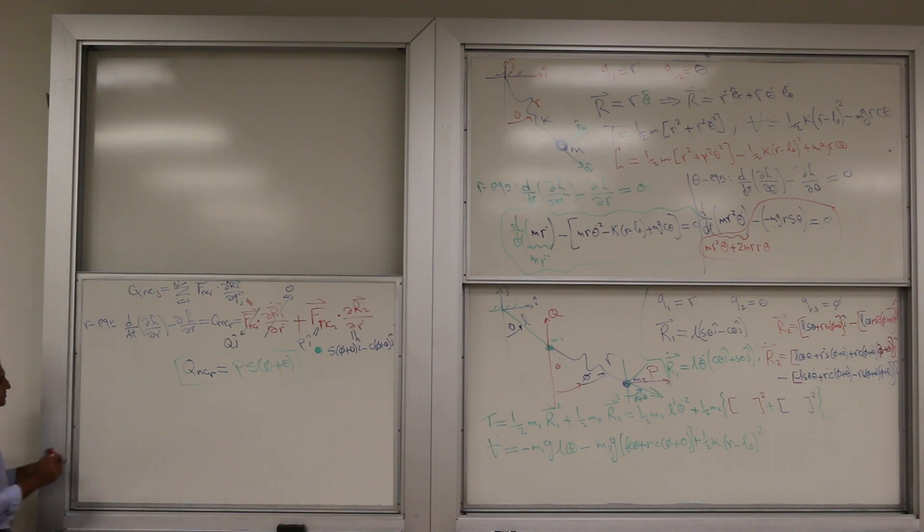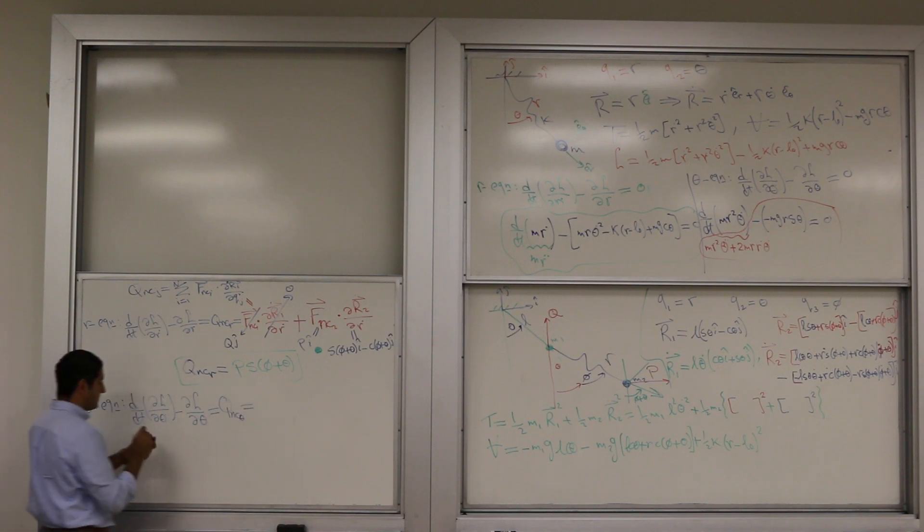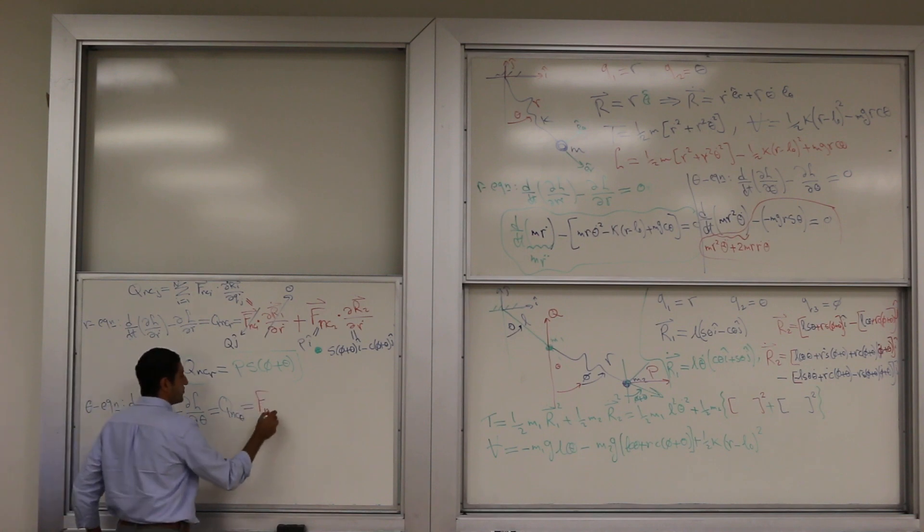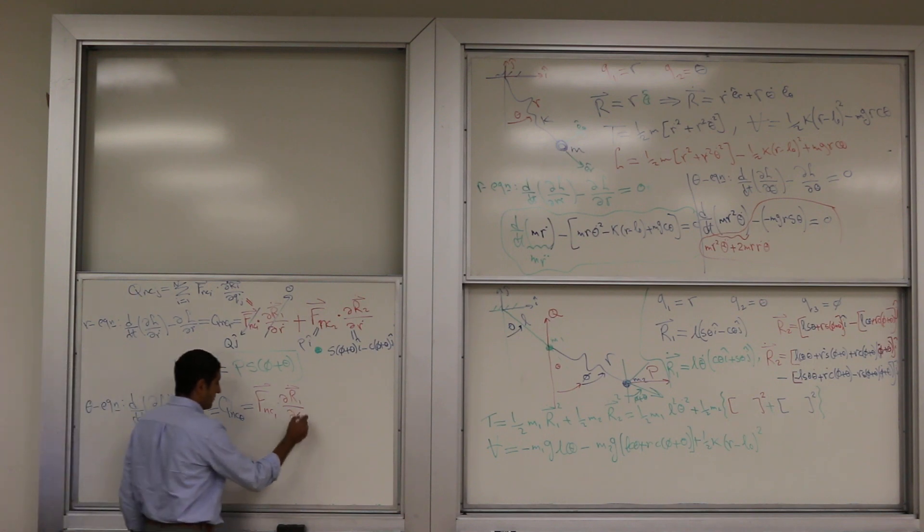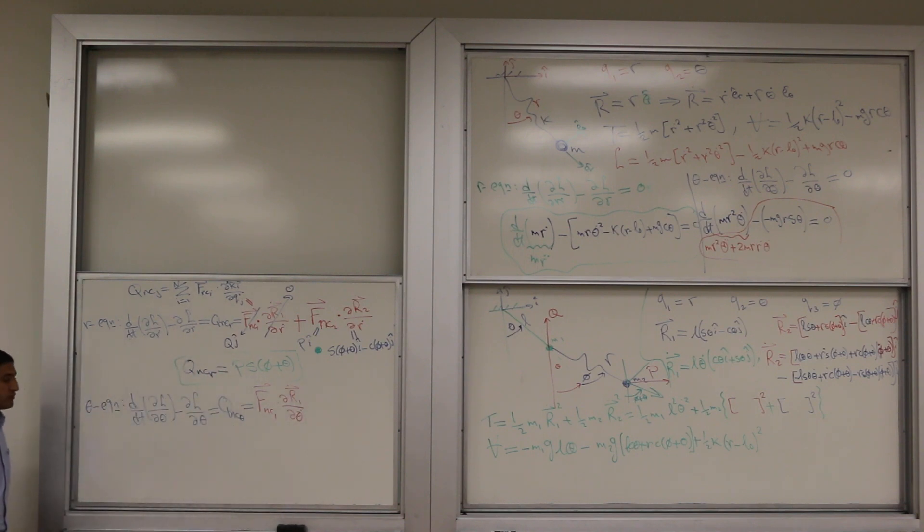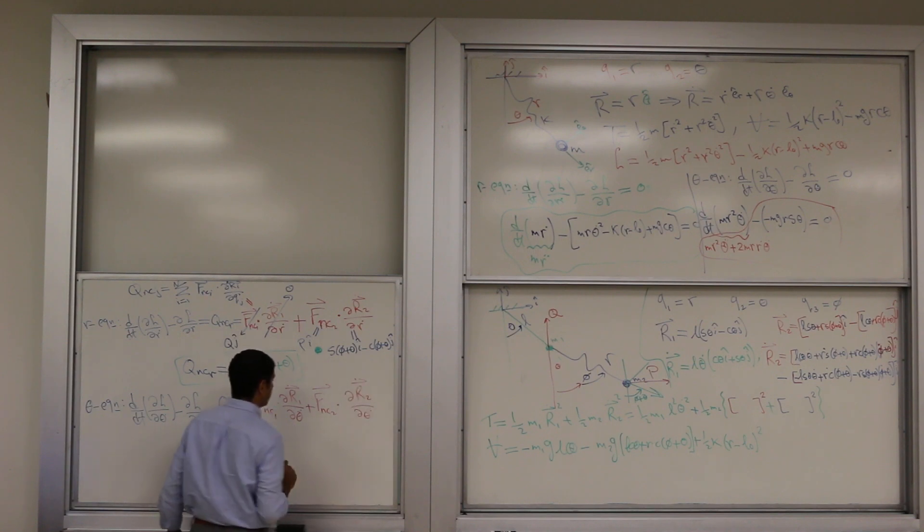Let's get together the theta equation, please. D by dt partial Lagrangian partial theta dot minus partial Lagrangian partial theta equals Q_NC_theta, which gives you a force of the mass 1 dotted with velocity 1 with respect to your generalized velocity, partial R1 dot partial theta dot, plus the second force dotted with the second velocity with respect to your theta dot again.